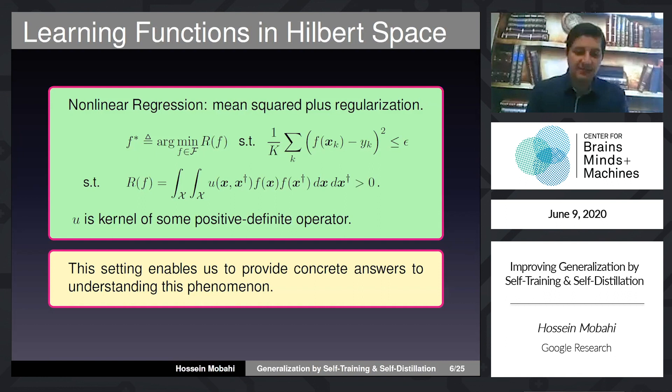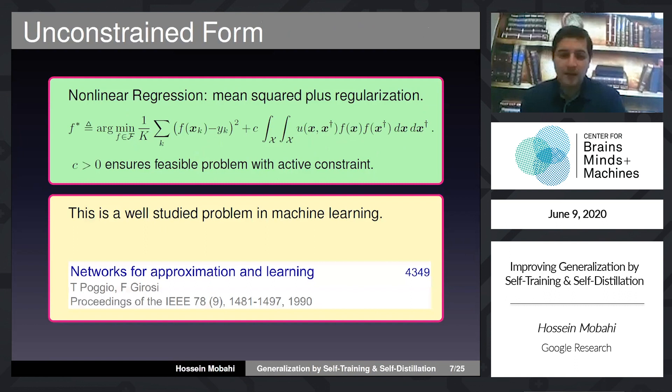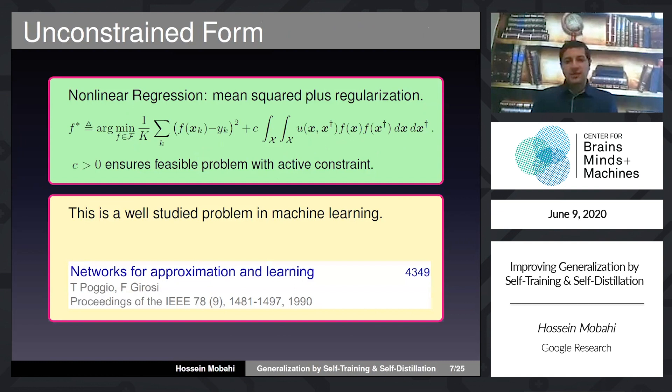We can use a Lagrange multiplier to convert this into an unconstrained optimization. We have a coefficient C which builds the trade-off between fitting accuracy and regularization. This form of regression problem is very well studied in the machine learning literature.